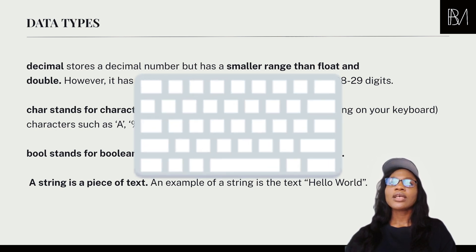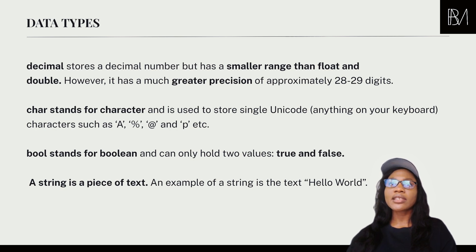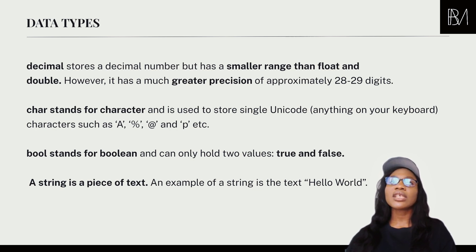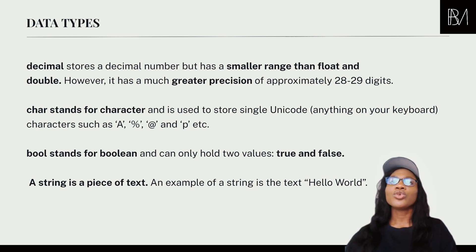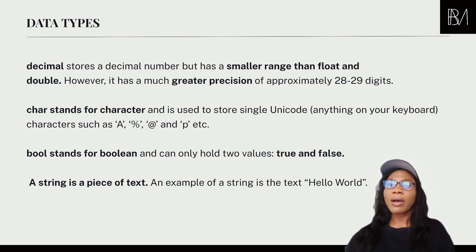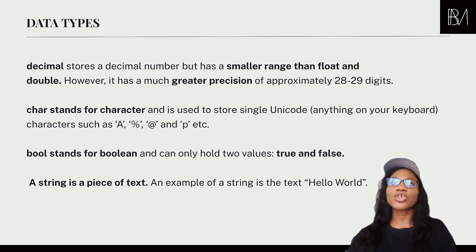The char stands for character. If you think of the things on your keyboard, the char represents all of those characters — the letters, the symbols — but not numbers. A character is a single character. Not to be confused with strings: a string is a piece of text. You can think of string as anything that holds your words and sentences. Anytime you're dealing with a text dataset of just words and sentences, those are strings — but a single character is a char.